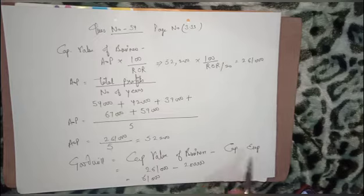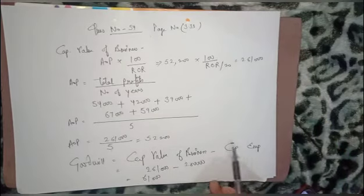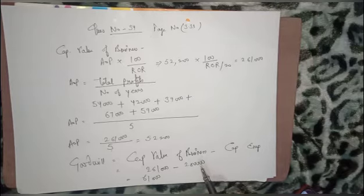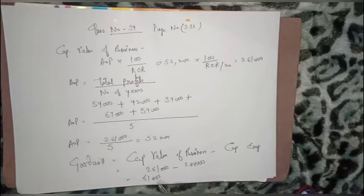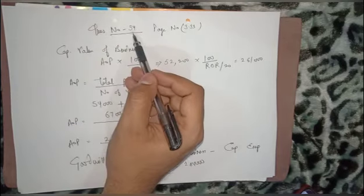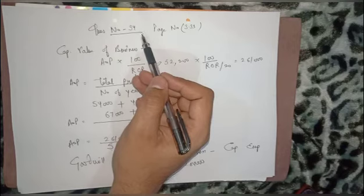To calculate goodwill, we apply the formula: Capitalized Value of Business minus Capital Employed. Putting the capitalized value of 2,61,000 and subtracting the net assets (which equals capital employed), we get goodwill of 61,000. So this is the solution to question number 34.